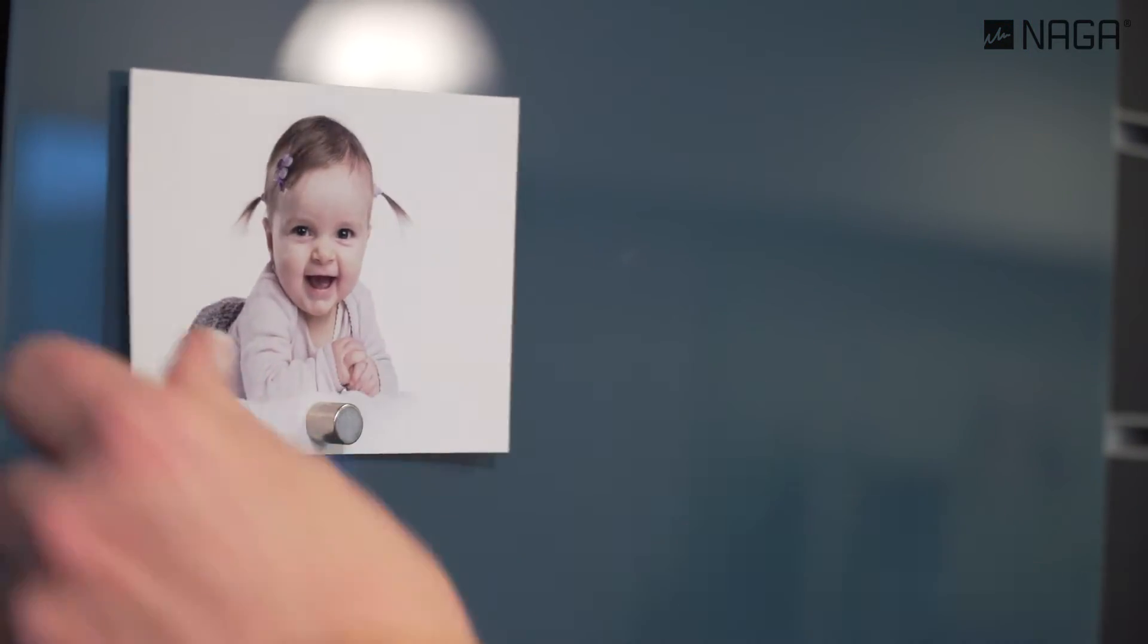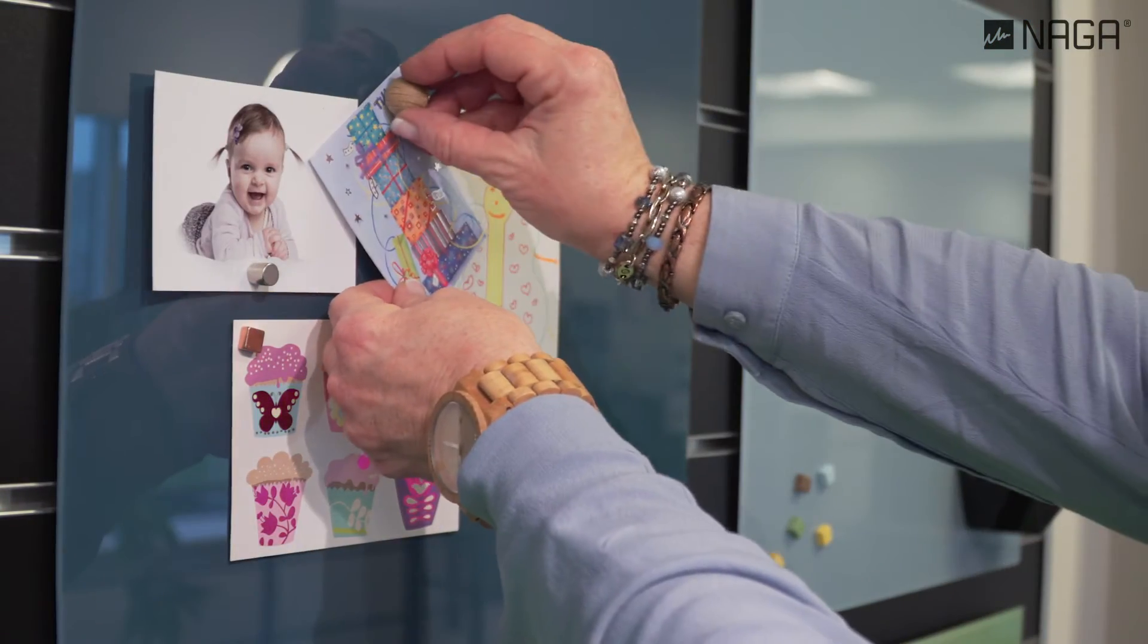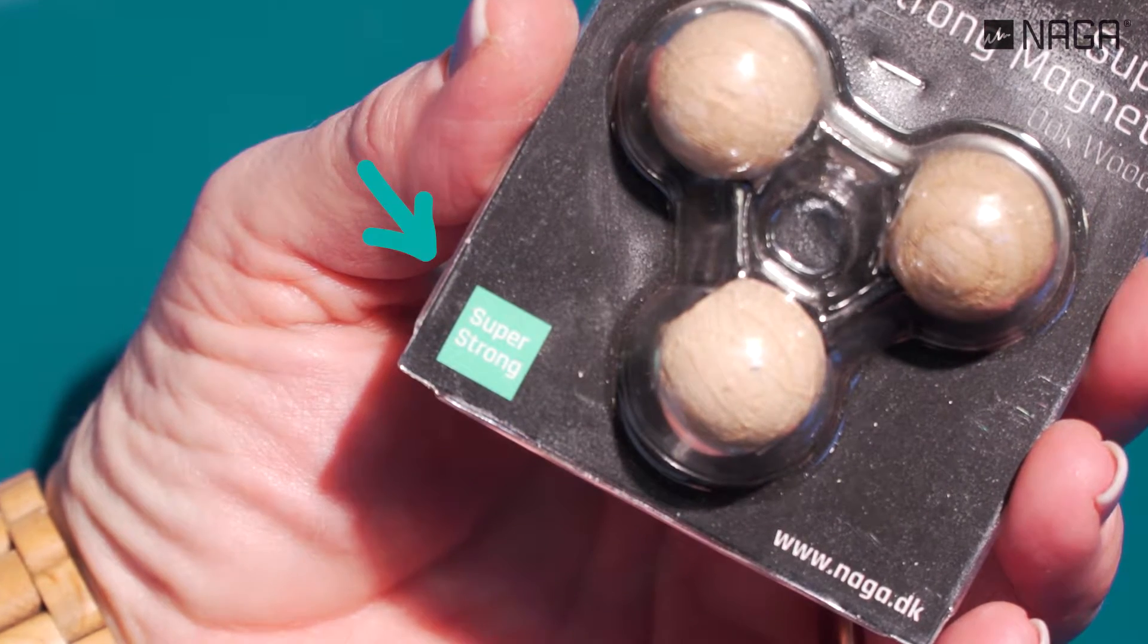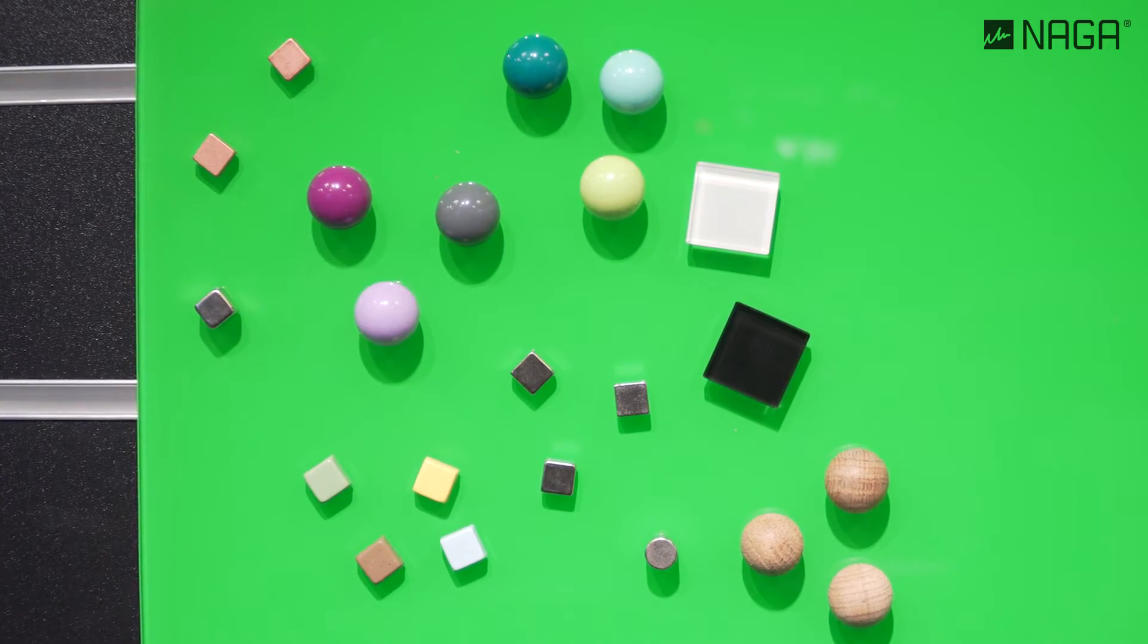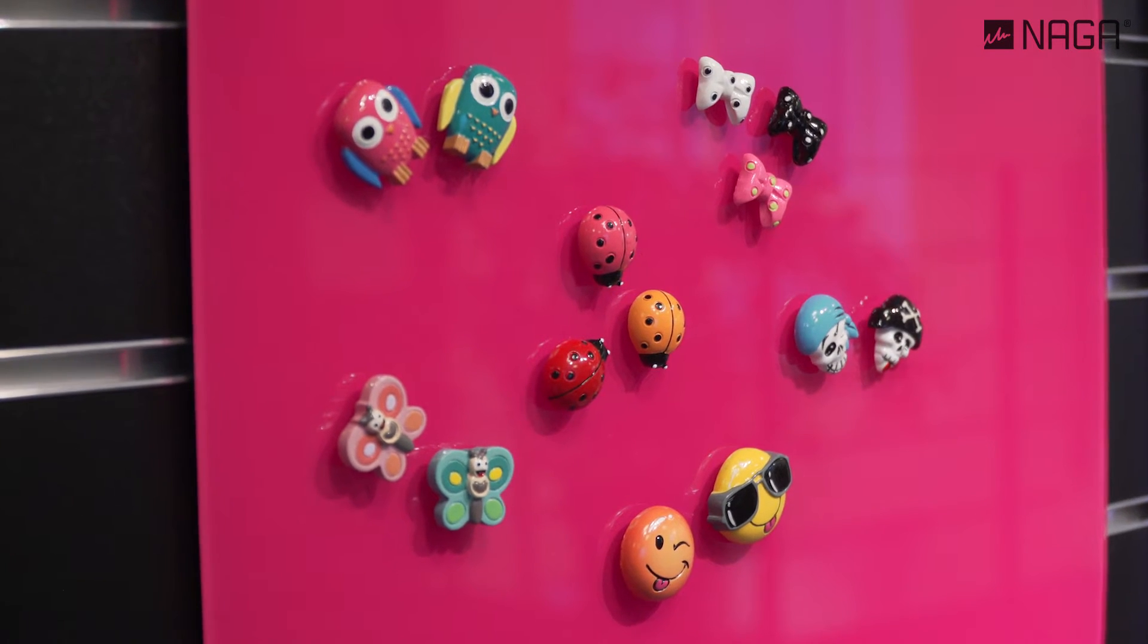You can attach photos, postcards and other items to the board with super strong magnets. They need to be super strong to be able to get hold of the metal plate on the back of the glass.